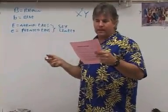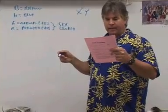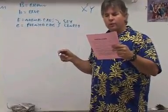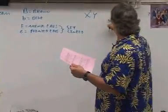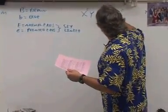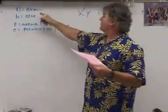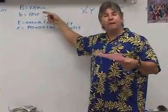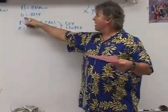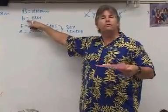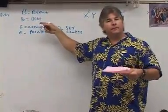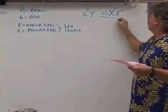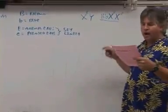They also have a second trait because this is a dihybrid cross. It says a brown-eyed female whose father had blue eyes. She's got brown eyes, so she has to have at least one big B. But her father had blue eyes, and the only way he could have blue eyes is if he had two little b's. The only thing he could have given her is another little b. So now you have the genotype of the woman: big B, little b.